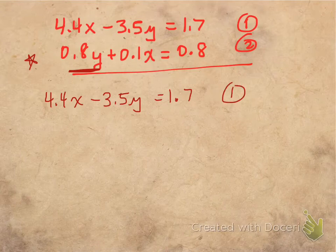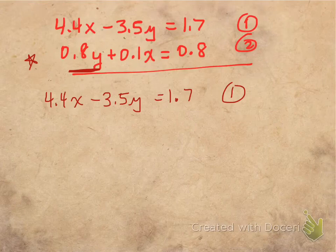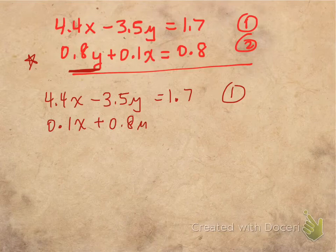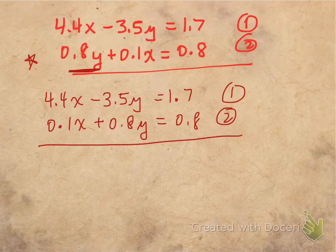And rewriting equation 2 so that it's in good form will tell me that it says 0.1x plus 0.8y, and that's going to equal 0.8. So that's my equation 2. Now it's in good form.